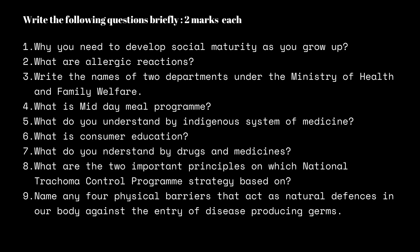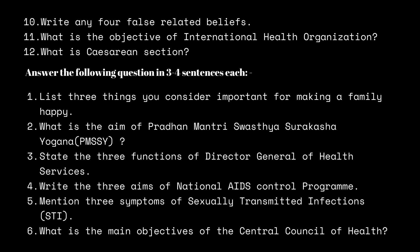Write any four false health-related beliefs. What is the chief objective of an international health organization? What is the caesarean section? Answer the following questions in three or four sentences, any four — these are three-mark questions. List the three things you consider important for making your family happy. What is the aim of the Pradhan Mantri Swastha Suraksha Yojana? State the functions of the Director General of Health Services. Write the three aims of the national AIDS control program. Mention three symptoms of sexually transmitted infection (STI).